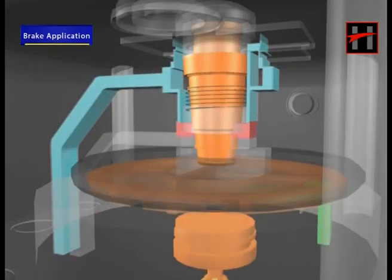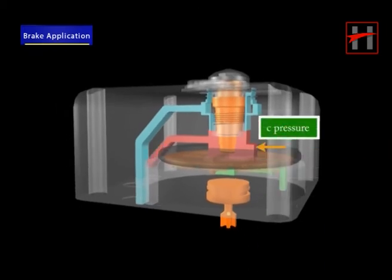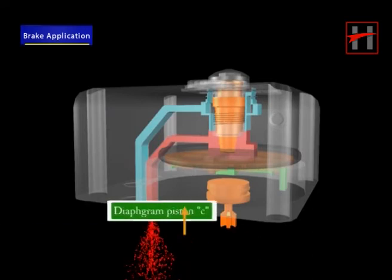Consequently, the pressure applied to the inlet valve flows as C pressure to the brake cylinders, and simultaneously goes to the diaphragm piston C.